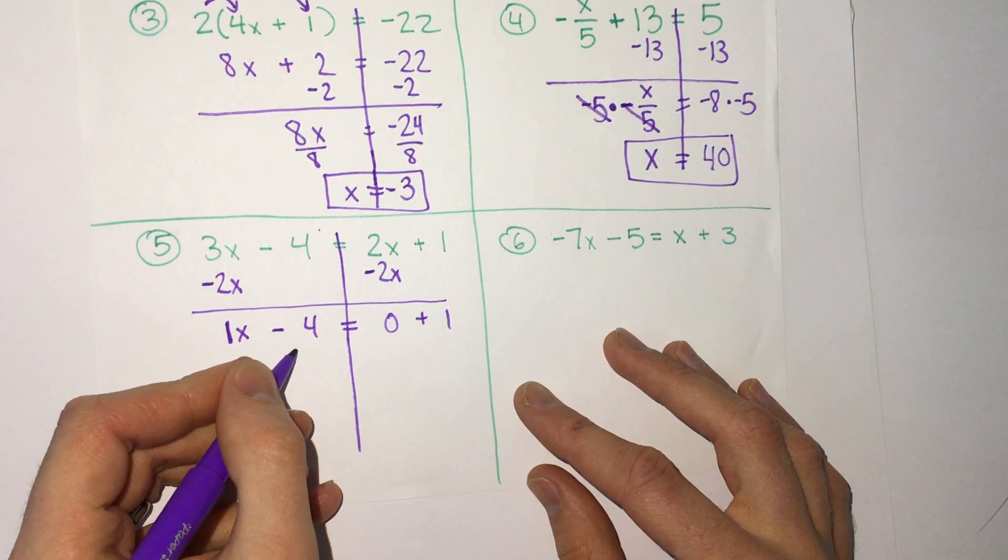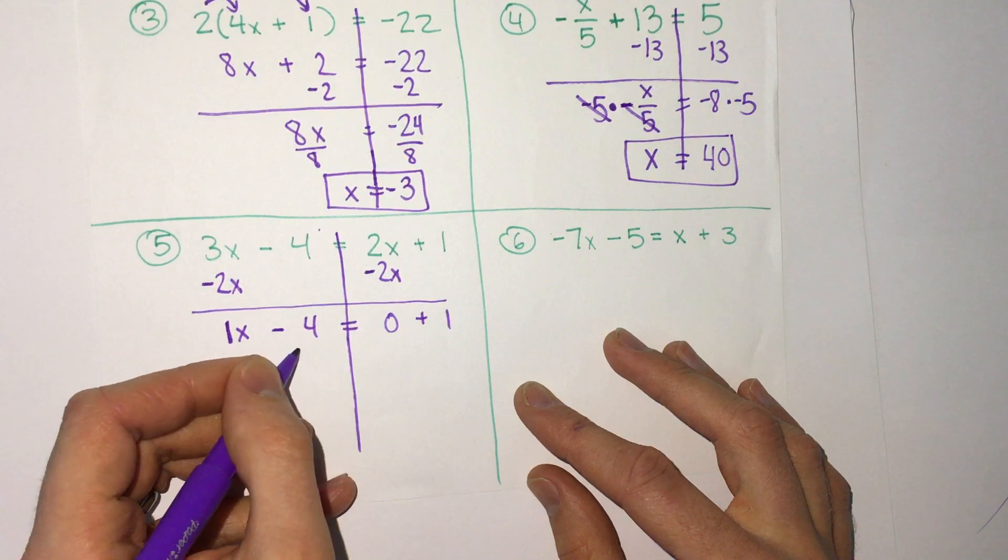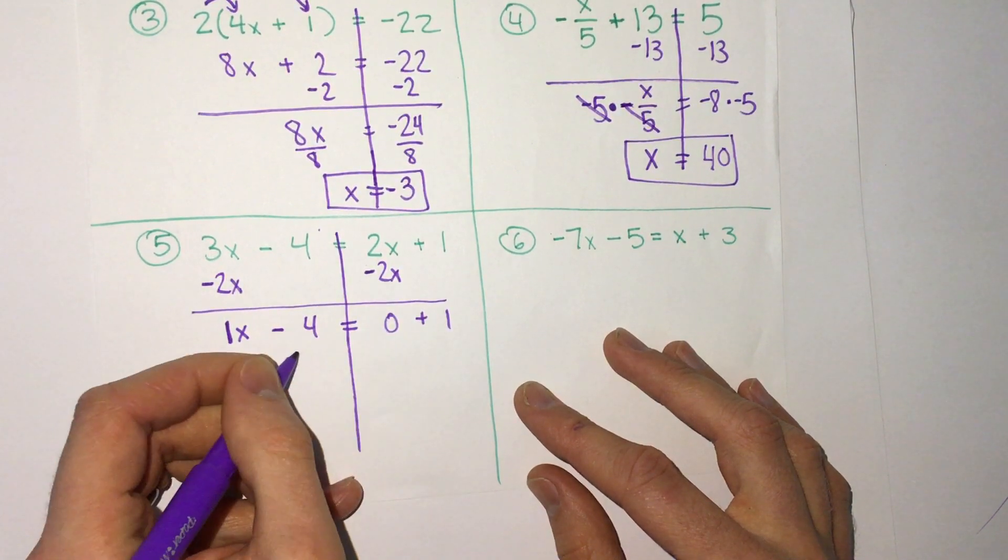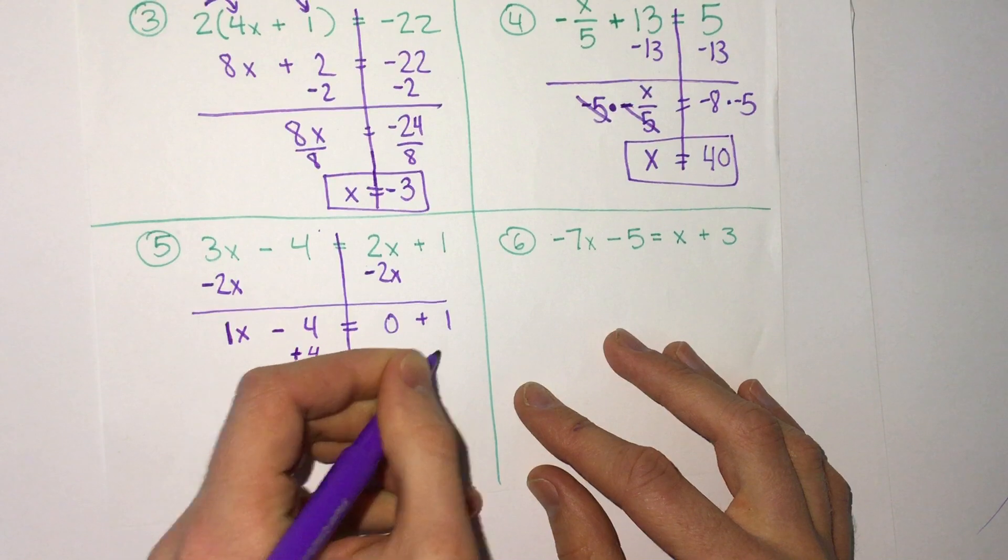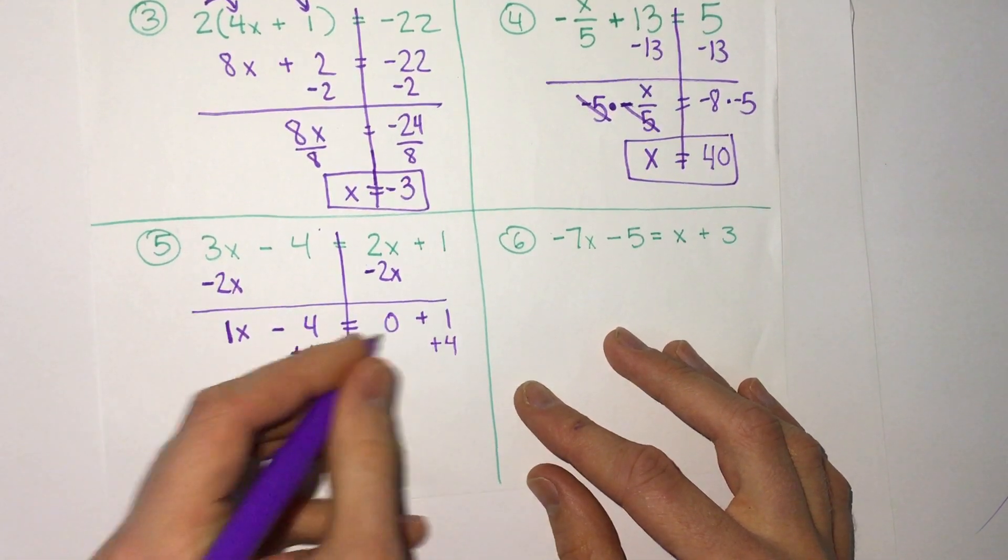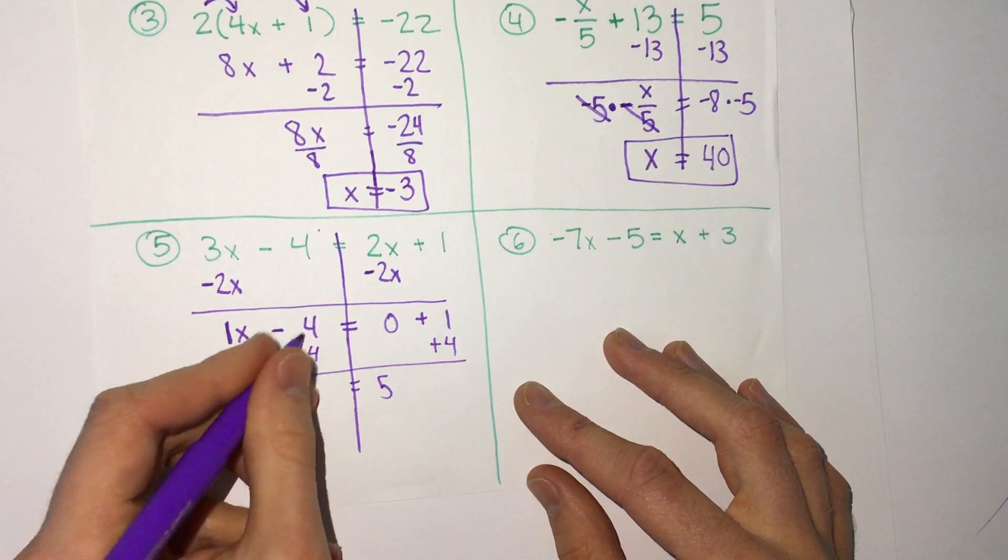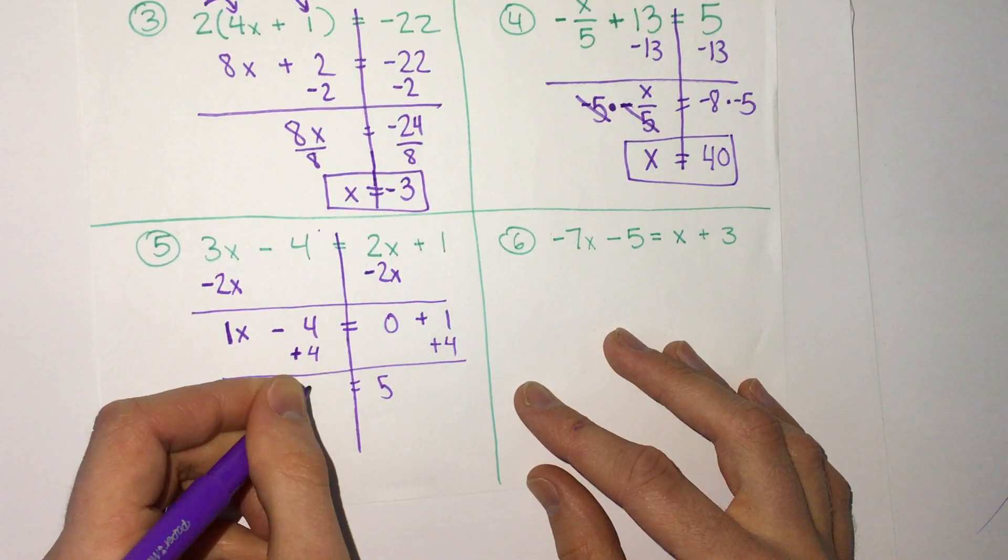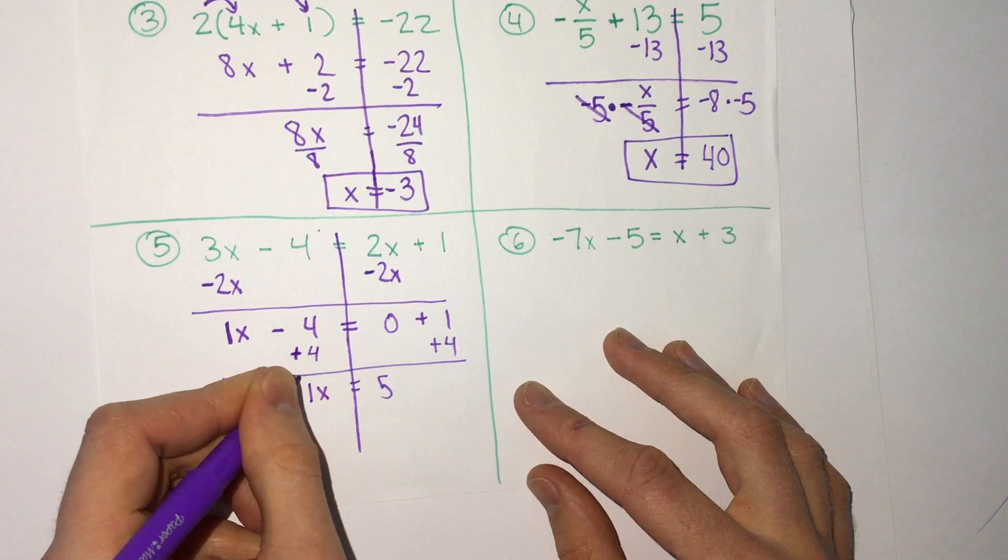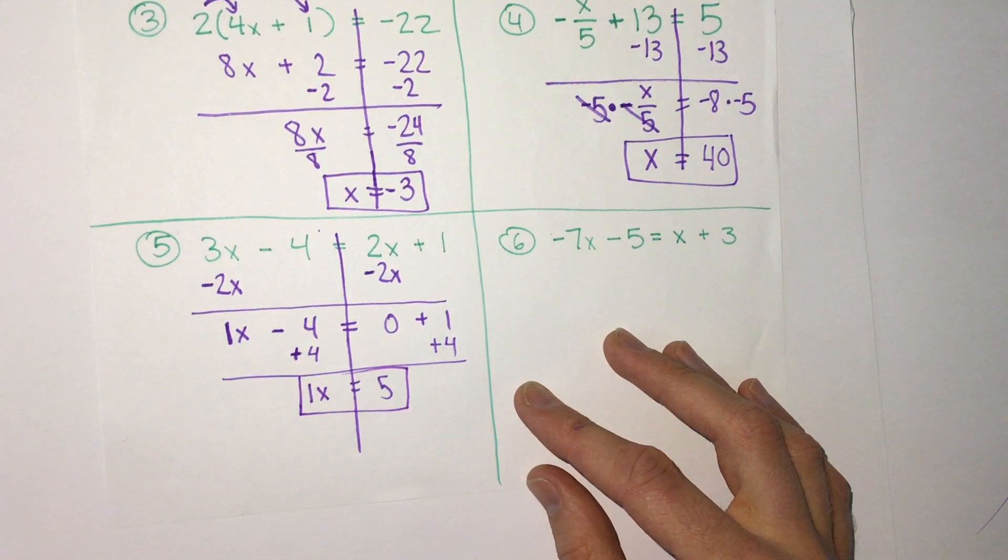Now we still have addition here because we have x minus 4 and we need the 4 to be on the other side. So we add 4 on both sides. 0 plus 1 plus 4, that is 5. And here, negative 4 plus 4 is 0. We just have 1x or x equals 5.